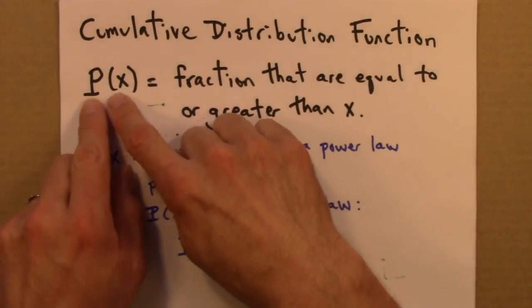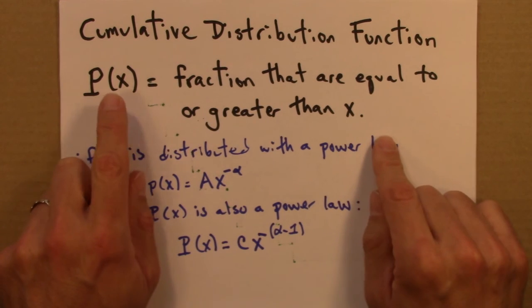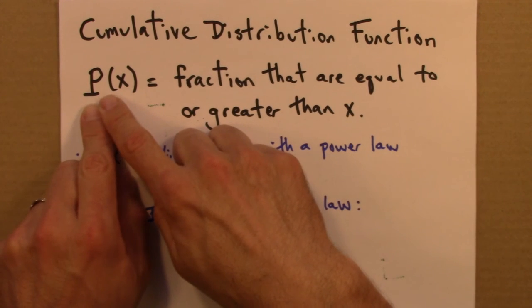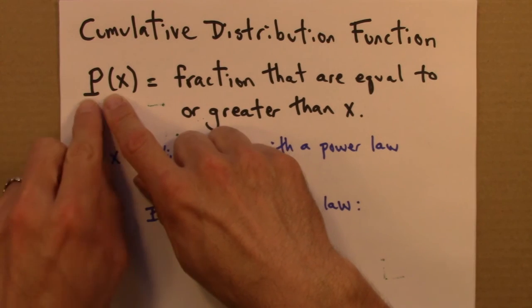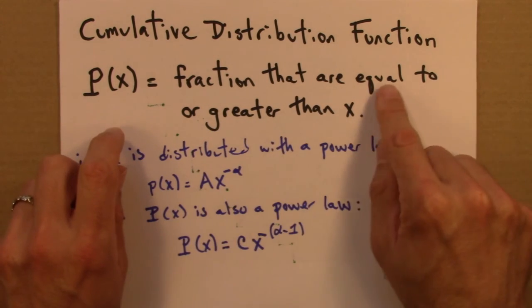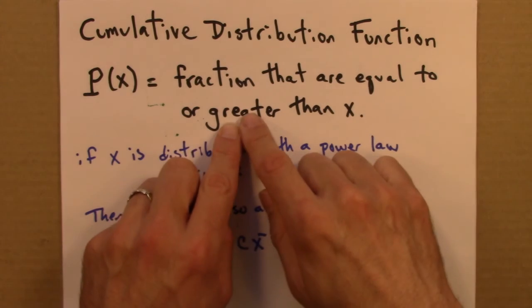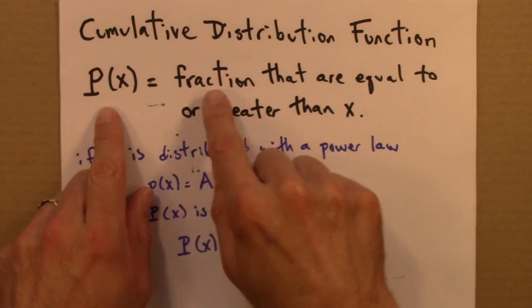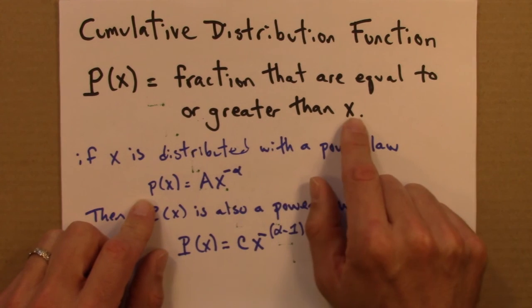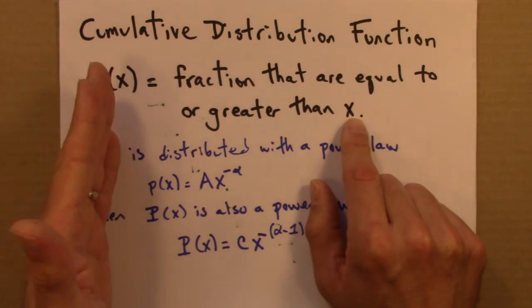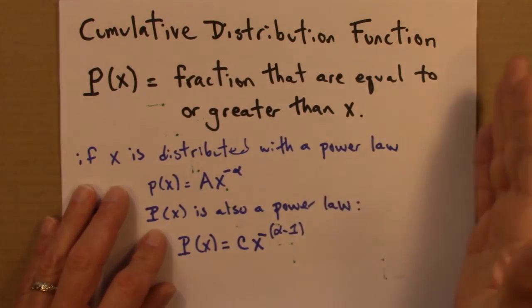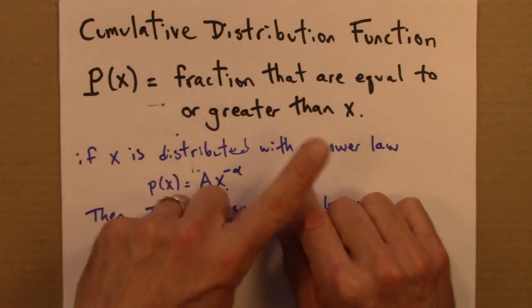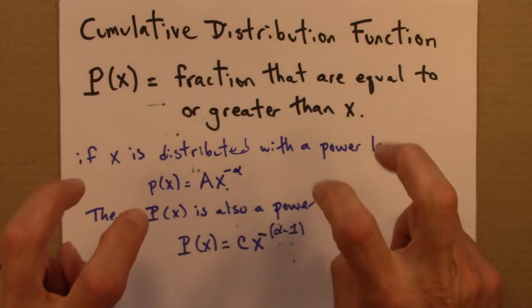Alright. The last thing I want to mention is that this is, in some ways, a non-standard definition for cumulative distribution function. This is used all the time in the study of power laws and in general and long tails. But, more generally, in probability and statistics, I'm used to seeing this where this is equal to or less than. So, that, if you've taken stats or probability, you're probably used to seeing cumulative distribution functions as the fraction that are equal to or less than some given value. So, it's just a matter if you're adding the curve up from the left or sort of down from the right.